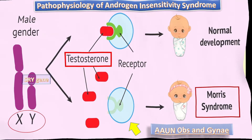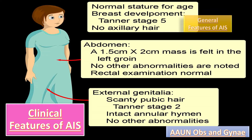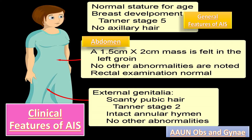The clinical features of AIS include: normal stature for age, breast development at Tanner stage 5, and no axillary hair development. On abdominal examination, a mass is usually felt in the groin, which are intra-abdominal testes that produce high levels of circulating testosterone. There are no other abdominal abnormalities and rectal examination is also normal.